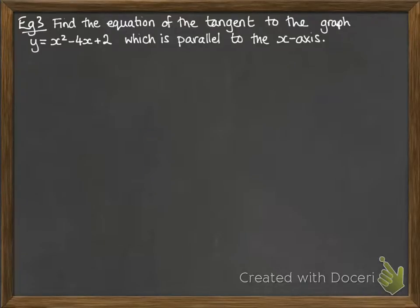Last one. Find the equation of the tangent to the graph which is parallel to the x-axis. We're not given a point at which to find the tangent, but we know that the tangent is parallel to the x-axis.